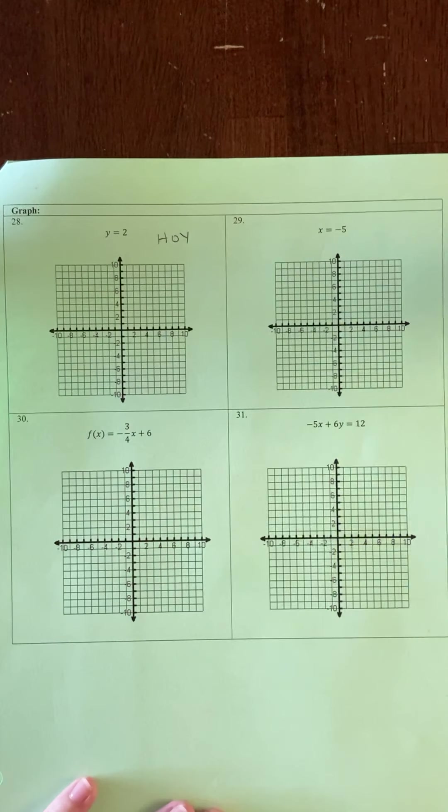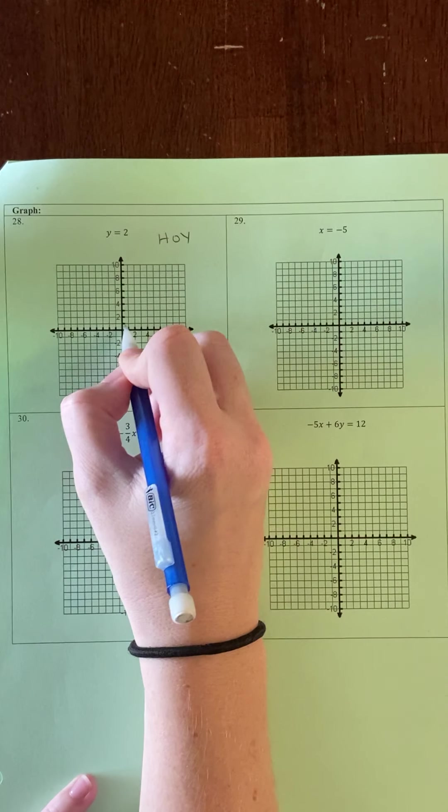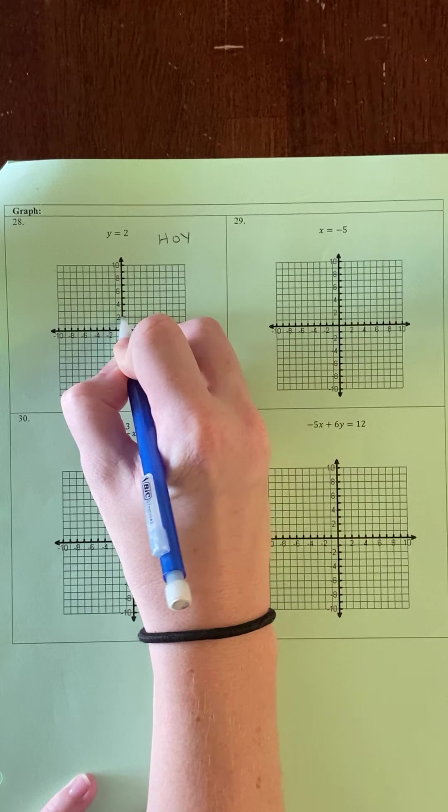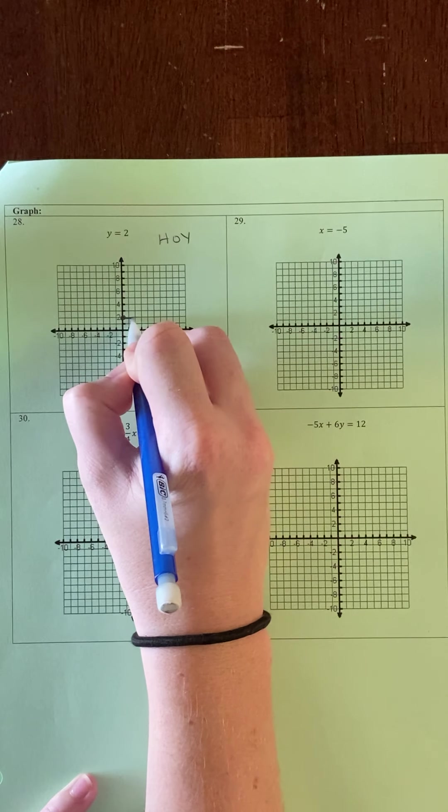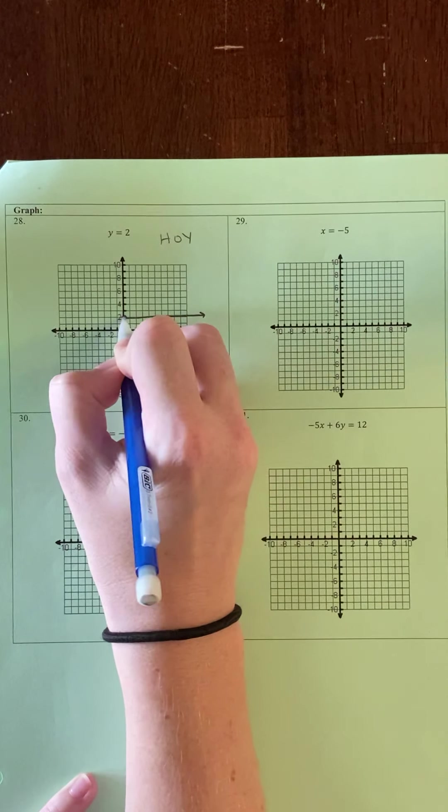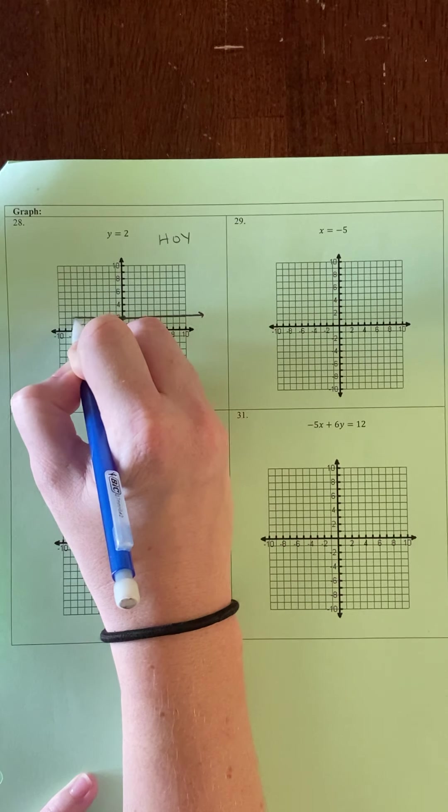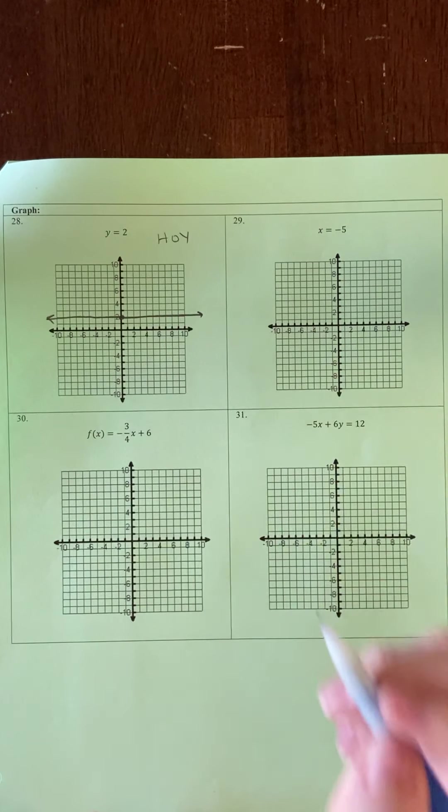So horizontal line at 2. I'm going to go up on the y-axis to 2 and draw a horizontal line at 2. That's how you would graph that one.